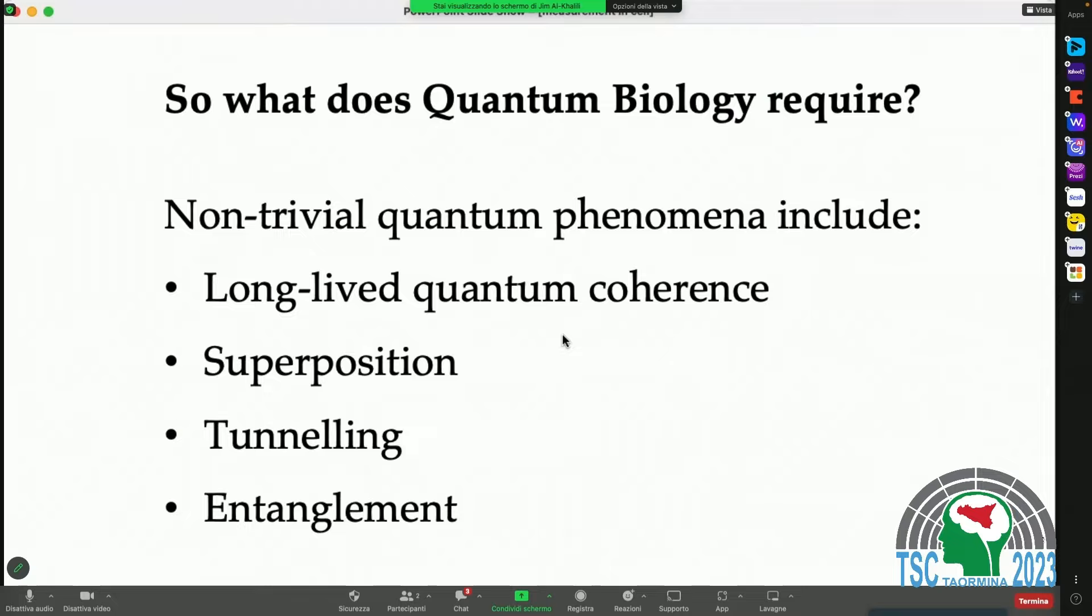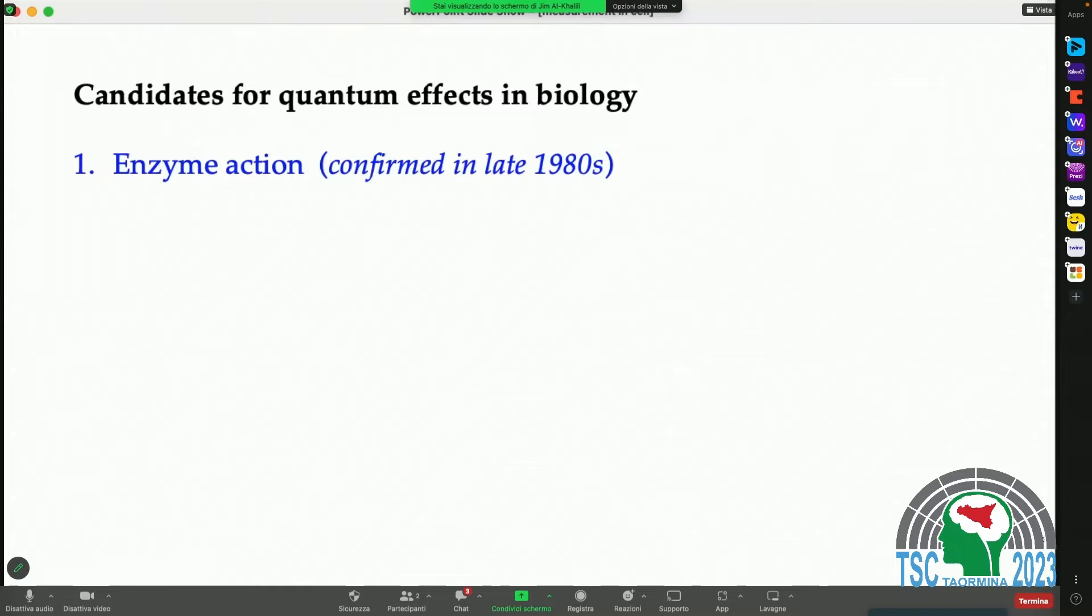Long-lived quantum coherence, quantum superposition, quantum tunneling, quantum entanglement. And over the past couple of decades, there have been a number of candidate examples where quantum biology seems maybe manifesting itself. Certainly enzyme action, the transfer of electrons and protons inside living cells, the building and breaking of biomolecules by enzymes, seems to have, it seems to make use of quantum effects, like quantum tunneling, to move particles from one part of the cell to the other.